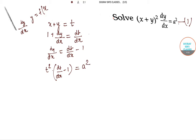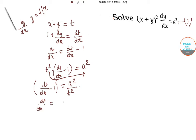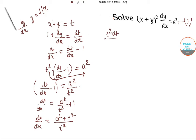Solving further, we can write dt/dx − 1 = a²/t². Taking t² as the LCM, we get (a² + t²)/t². Now separating variables — taking the t components on one side and x on the other — we can write t² dt / (a² + t²) = dx.